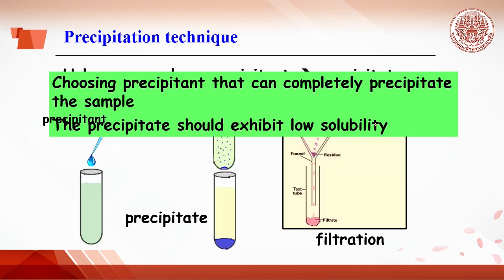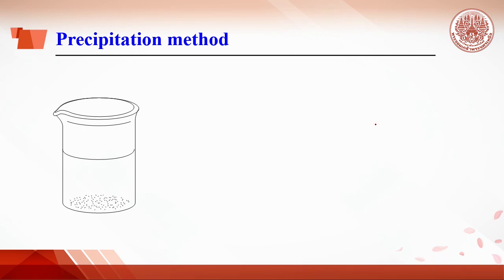And the precipitate should exhibit low solubility. In this experiment, an unknown sample having barium ion. Once dissolving in water, barium ion is obtained. Then, sulfuric acid precipitant, which has sulfate anion, is added. As soon as these two ions meet, white precipitate of barium sulfate is formed.